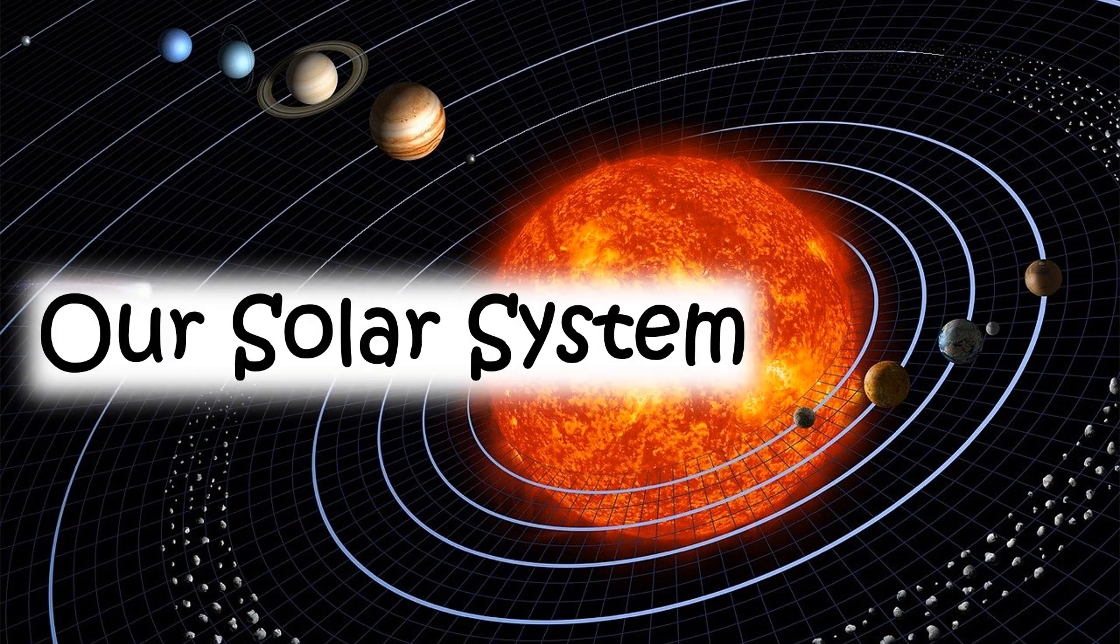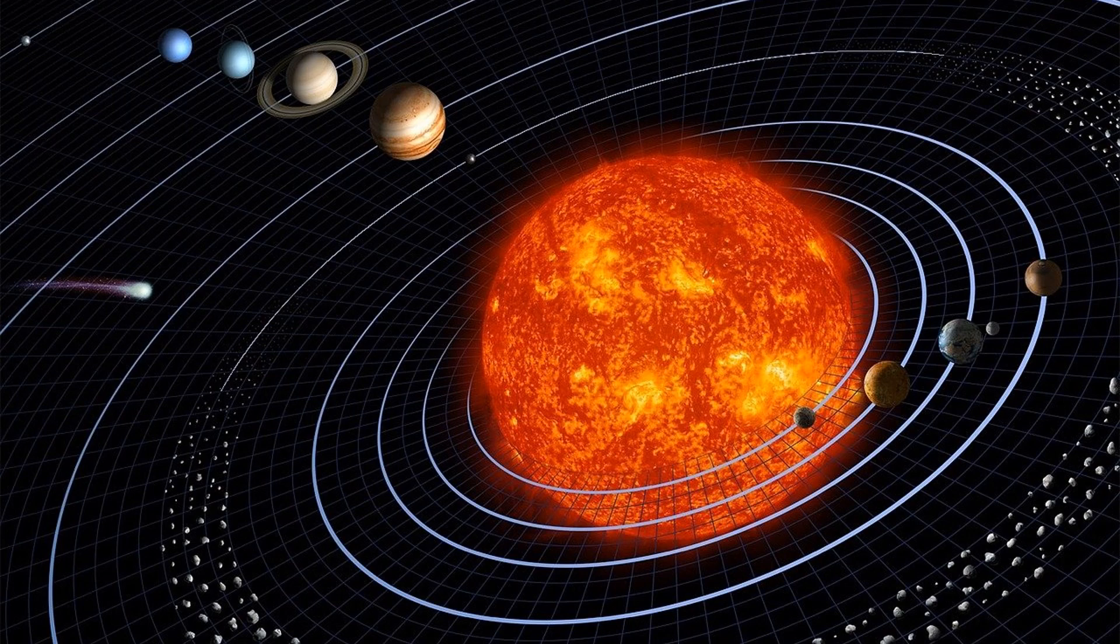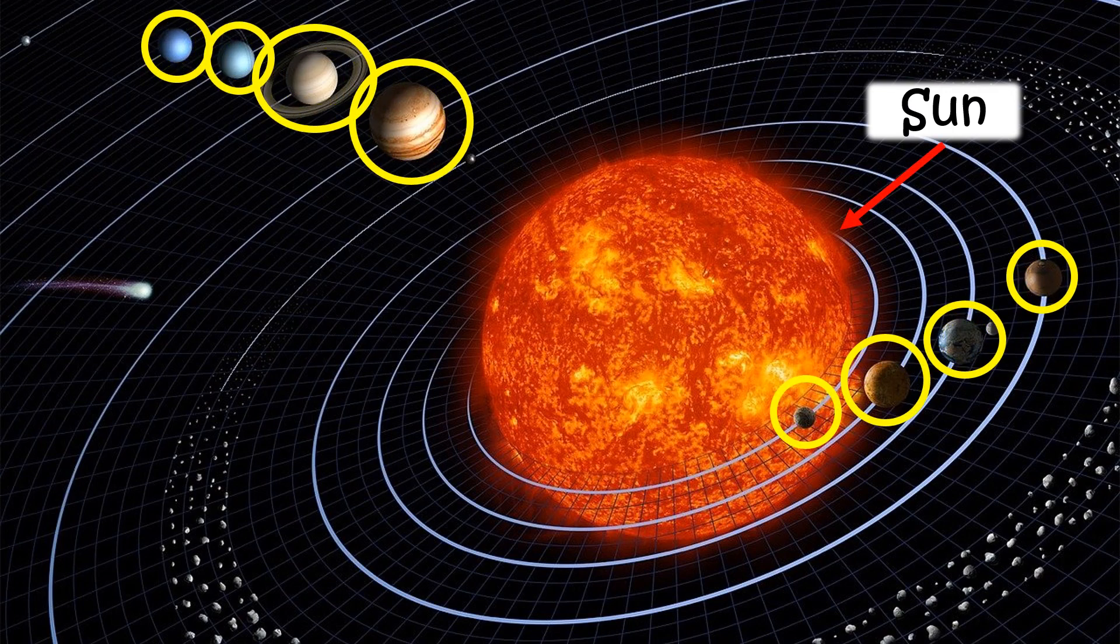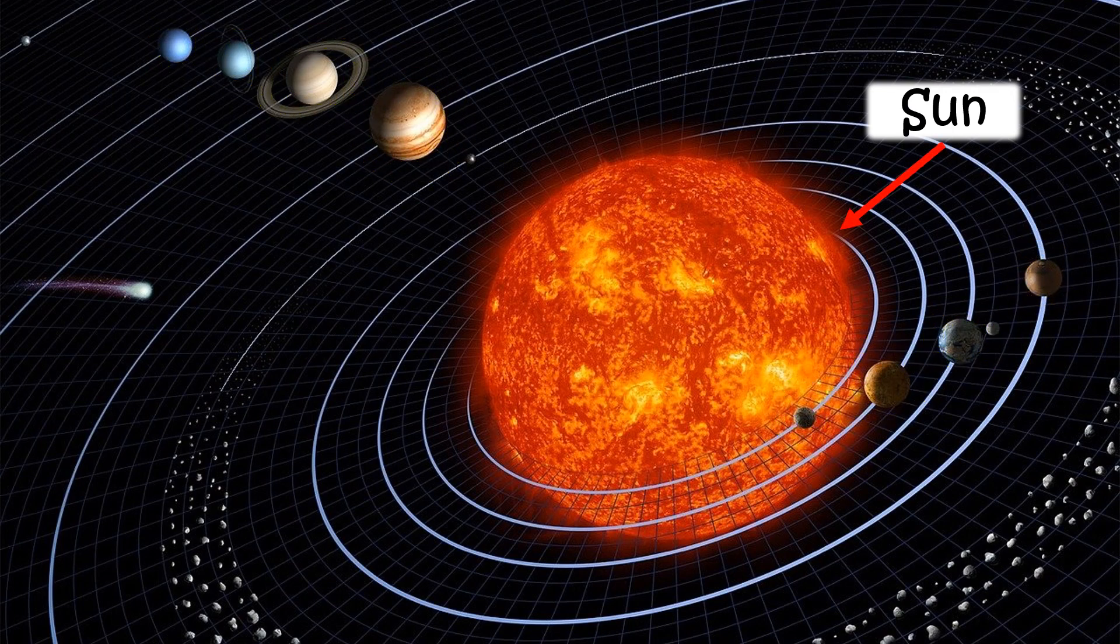Our Solar System. Our solar system consists of our star, that is the Sun, the eight planets, and hundreds of moons. Remember, there is only one star in our solar system, that is, the Sun.